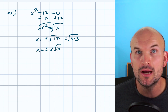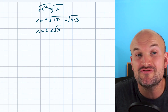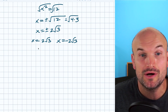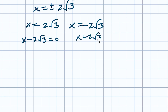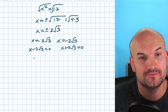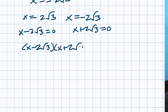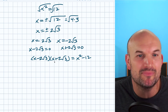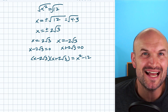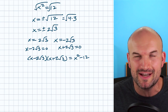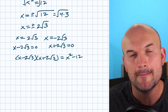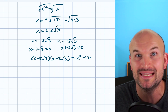If you want the factored form, you can do exactly what we did before: set each root equal to x, then set each equation equal to zero — those two expressions are your factors. Multiply them together to get your factored form. If you multiply it out, it simplifies back to x squared minus 12. It's not terribly difficult if you recognize the difference of two squares relationship, but you can see that using inverse operations is definitely the easier approach.